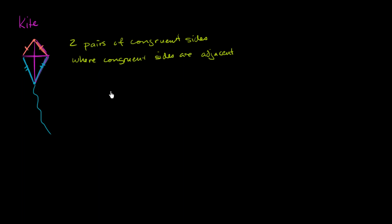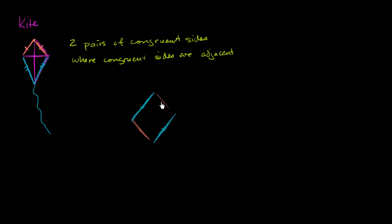You might ask, what's the other alternative? If the congruent sides aren't adjacent, what else could they be? Well, the congruent sides could be opposite each other. If these two sides are congruent but don't share a common endpoint — and we're still dealing with a quadrilateral — you would have one congruent side here that is congruent to this side over here, and another congruent side here that is congruent to this side. That gives two pairs of congruent sides, but they're not adjacent — they don't share any common endpoints with each other.